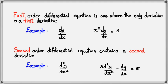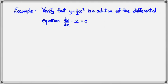We're going to move on to checking solutions. Here's an example: verify that y equals half x squared is a solution of the differential equation dy/dx minus x equals 0. The first thing we need to do is figure out what dy/dx is. This is our equation: y equals half x squared.